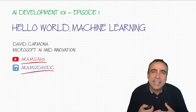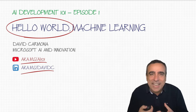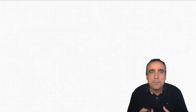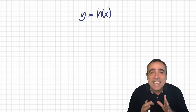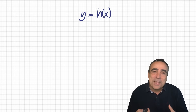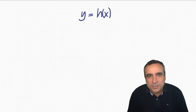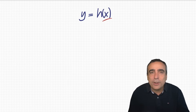Today we are going to do the hello world of machine learning. The essence of machine learning can actually be summarized with this math expression: y equals h of x. That's it — that's the most important math you need to know. Because at the end of the day, a machine learning model is just a function that takes an input x and produces an output y.